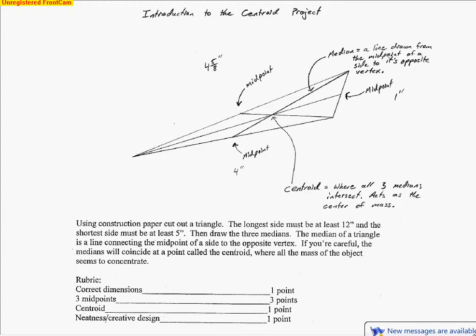Today we are going to learn what a centroid is and how to find one on a triangle. Basically, a centroid is where three medians come together.